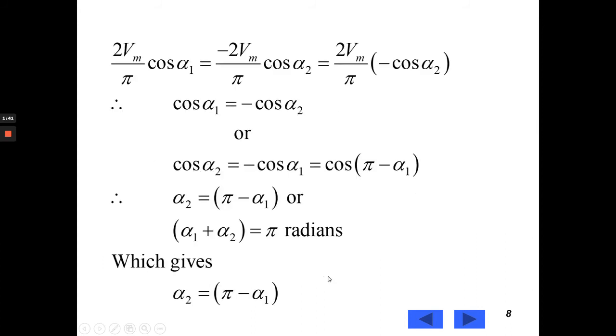So, VDC1 equal to minus VDC2. Now, if we compare these two waveforms, its expression 2Vm by pi cos alpha 1 equal to minus 2Vm by pi cos alpha 2.